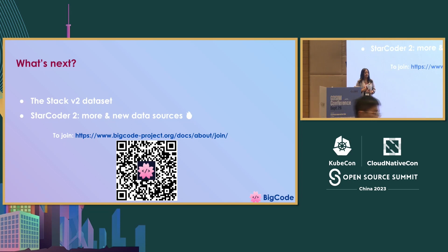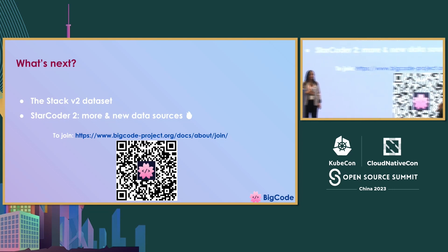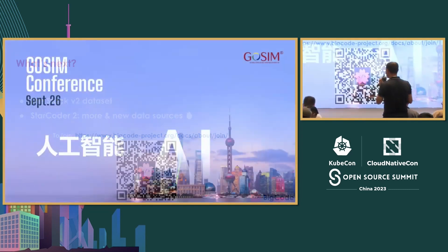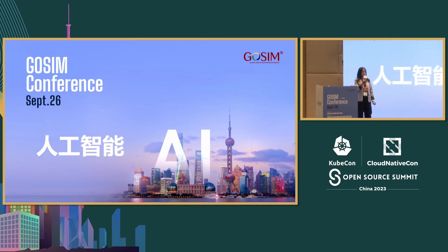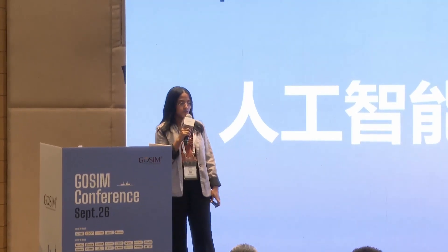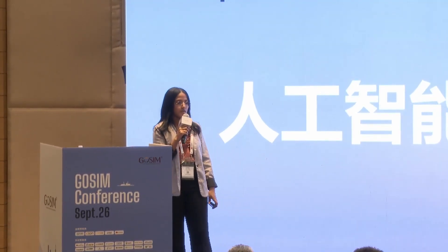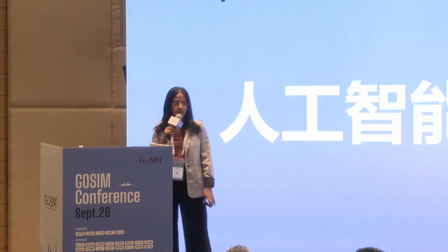Q: Thank you for speaking. I would like to know about the PII removal tool or model you're using — is it available separately, somewhere we can find it? A: Yes, everything I presented is open source. If you go to the BigCode organization on Hugging Face, you'll find a list of everything. The model is called StarPII and it's open source — you can use it, and also the pipeline we use to run inference is available on GitHub. If you don't find it, you can contact me and I'll point you to it. It's called StarPII on the Hugging Face Hub.